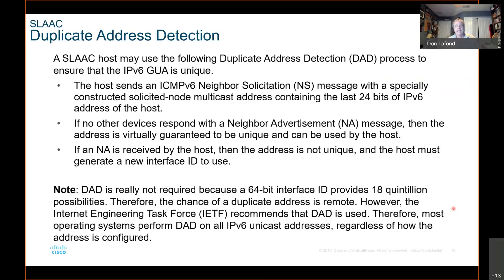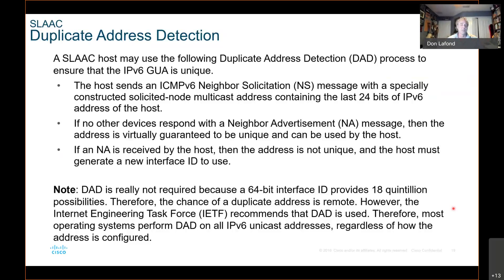If a neighbor advertisement is received by the host, then the address is not unique and the host just regenerates a new address randomly. DAD is not really required because the 64-bit interface ID provides 18 quintillion possibilities — therefore the chance of a duplicate address is remote. However, the IETF recommends that DAD be used, and most operating systems perform DAD on all ICMPv6 unique addresses regardless of how the address is configured.